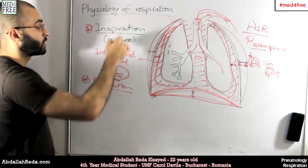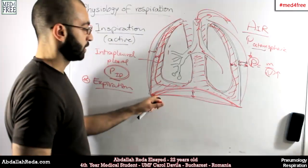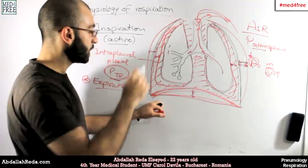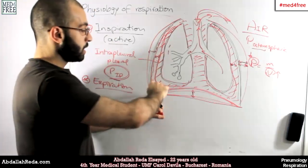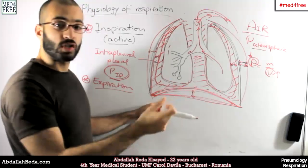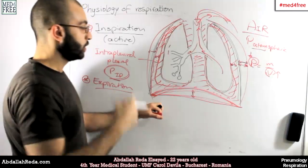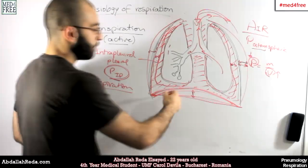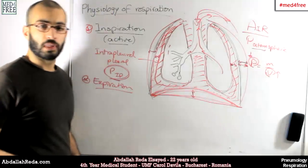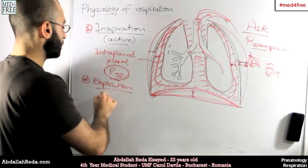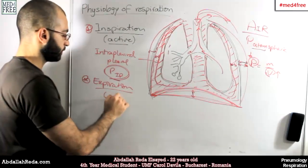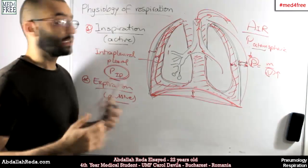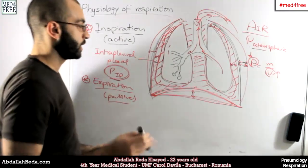That's why inspiration is active — because it involves a command from the brain, from the medulla to be more specific, so muscles contract and you spend energy on that. While expiration happens when the muscles just relax. So inspiration is active; expiration is passive. That is the concept of the process of respiration.